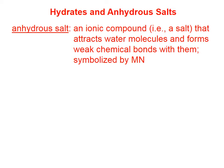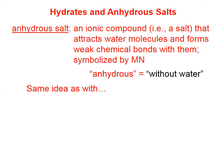Let's define a couple of terms. An anhydrous salt is an ionic compound — that is, a salt — that attracts water molecules and forms weak chemical bonds with them. A generic anhydrous salt is symbolized capital M, capital N, which stands for metal and non-metal. That's what we have any time we have a salt. Anhydrous means without water.